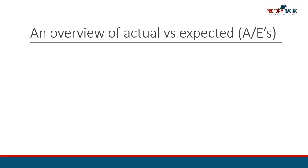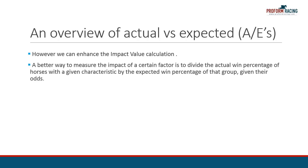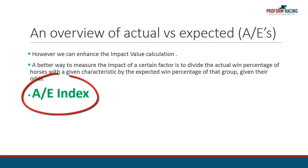In part 2 of this series of presentations, I introduced impact values and their use within ProForm. However, we can further enhance the impact value calculation. A better way to measure the impact of a certain factor is to divide the actual win percentage of horses with a given characteristic by the expected win percentage of that group given their odds. This statistic is called the AE Index.